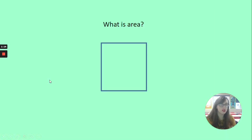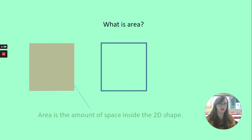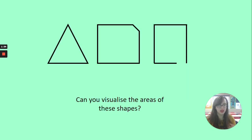So do we have any idea what area is? Here's my shape, and I can see the perimeter, the outside of the shape, but what's the area? Area is the space inside of a shape. So perimeter is the outside and area is the space on the inside. Area is the amount of space inside a 2D shape. Here are some different shapes. I wonder if you can imagine what that area is going to look like.